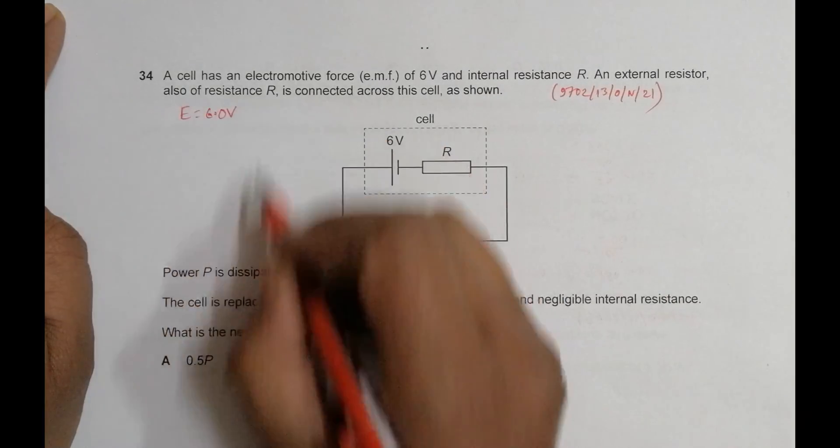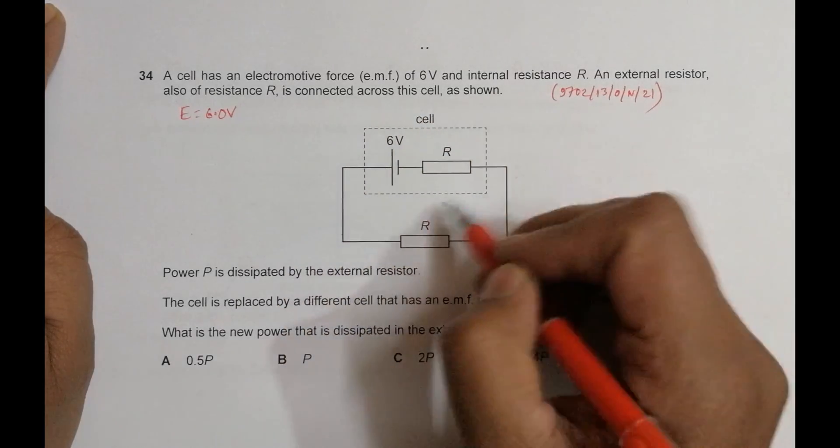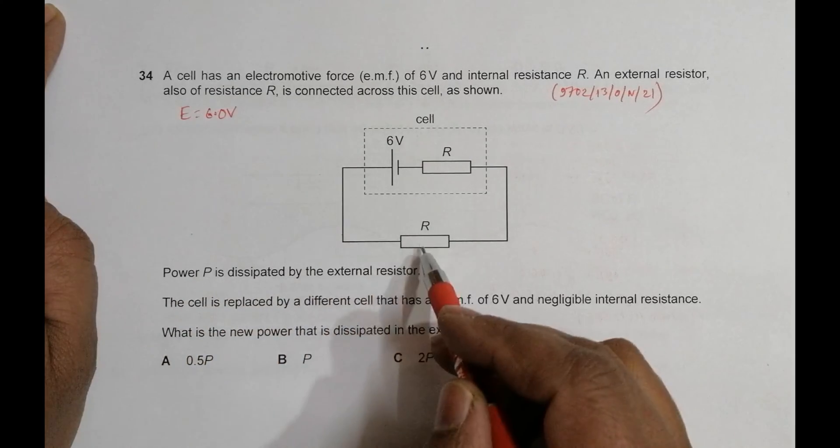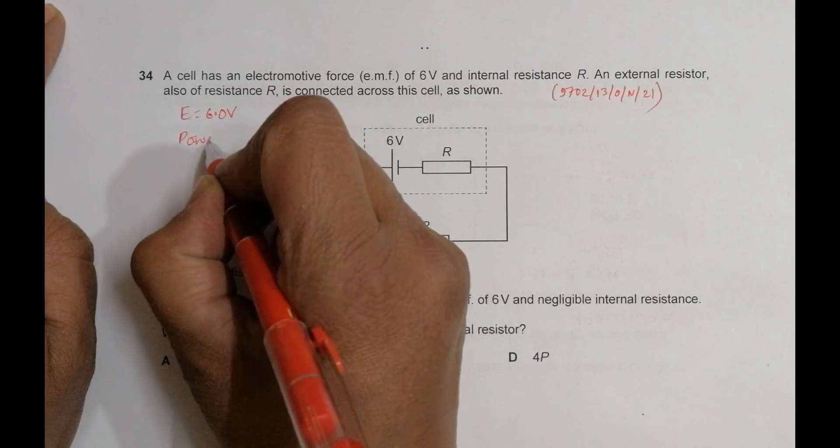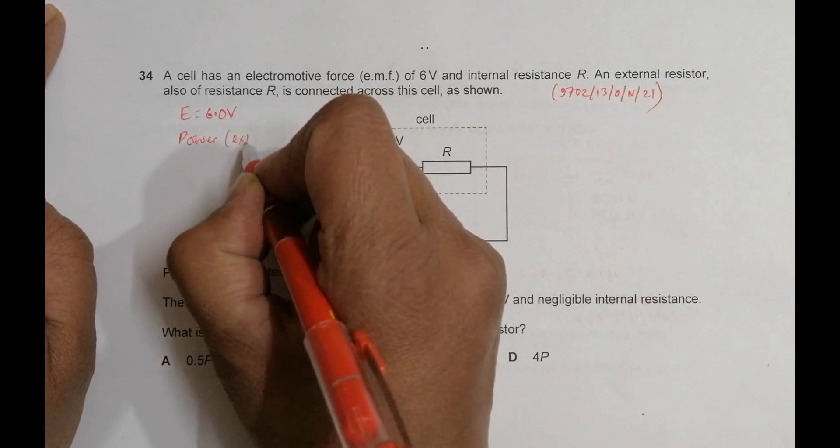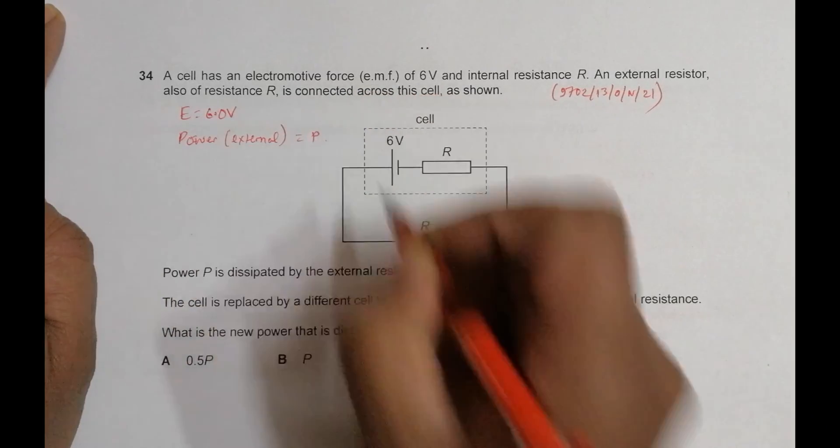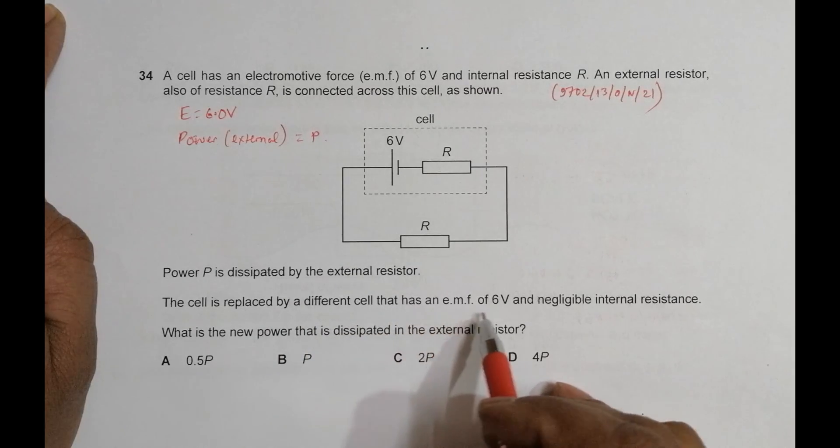Power P is dissipated by the external resistor. The cell is replaced by a different cell that has an EMF of 6 volts and negligible internal resistance.